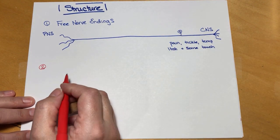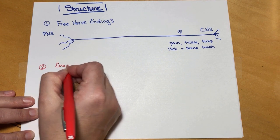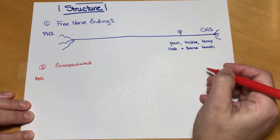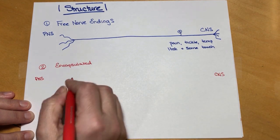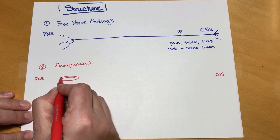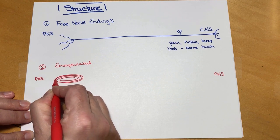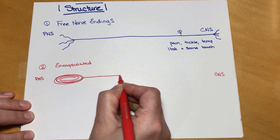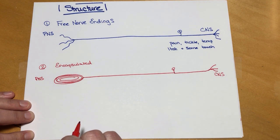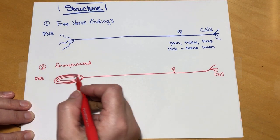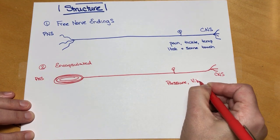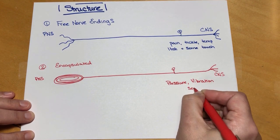The second structural type of receptor is called an encapsulated receptor. We have the PNS on the left and the CNS on the right. Instead of having a free nerve ending just hanging out there, in an encapsulated receptor the dendrites of the neuron are encapsulated in a connective tissue capsule. We have the axon, the cell body, and the terminal end. The stimuli that will activate an encapsulated receptor are things like pressure, vibration, and some types of touch.